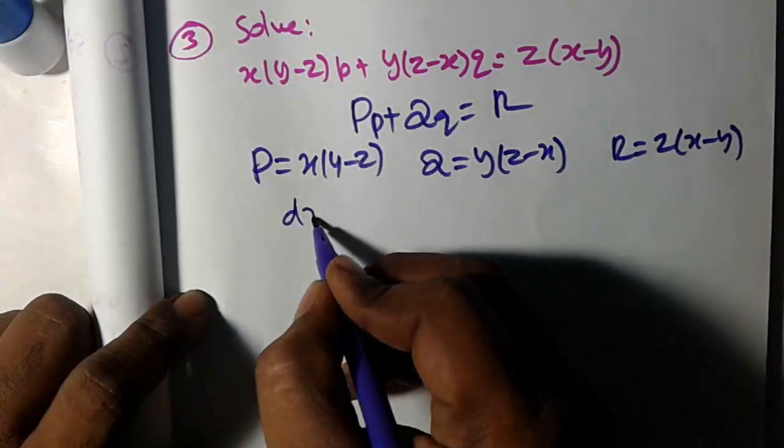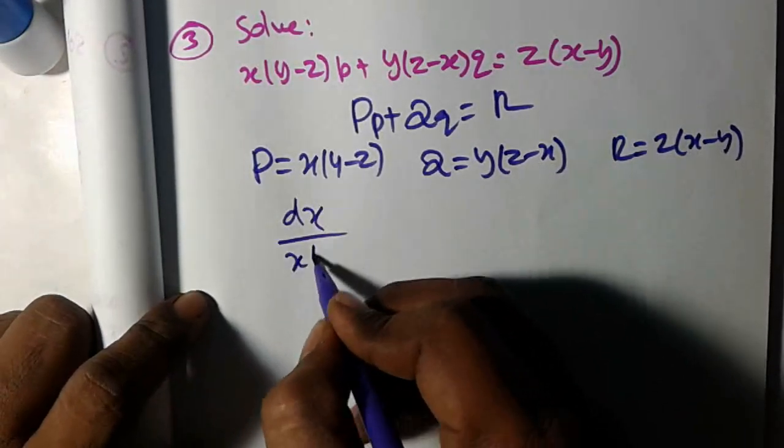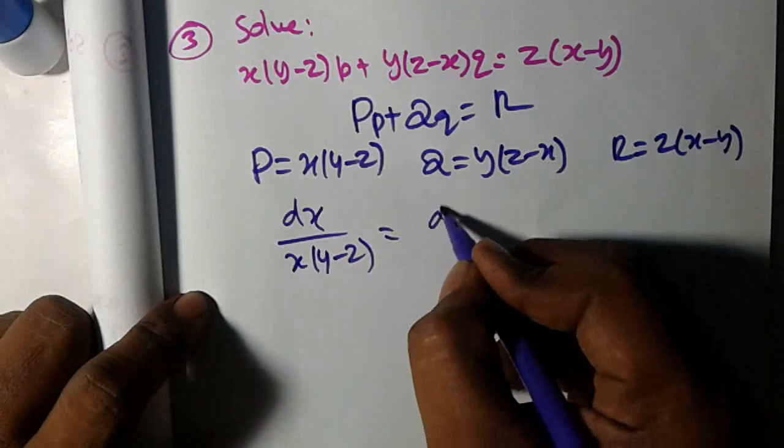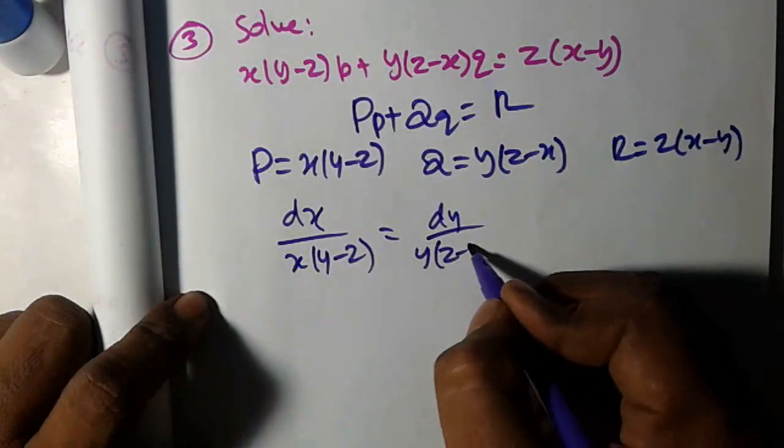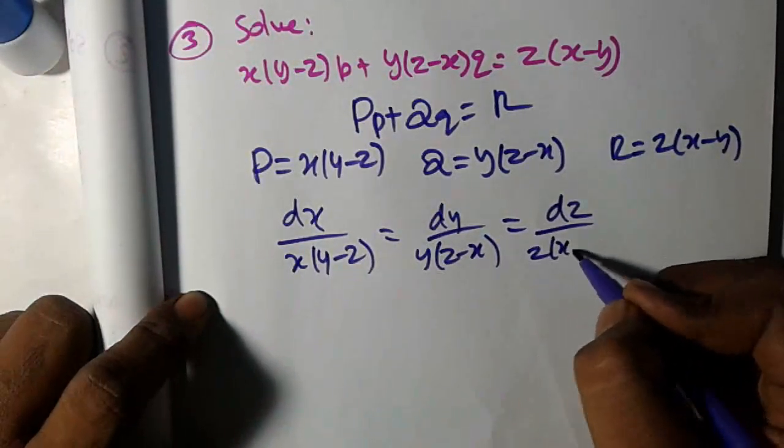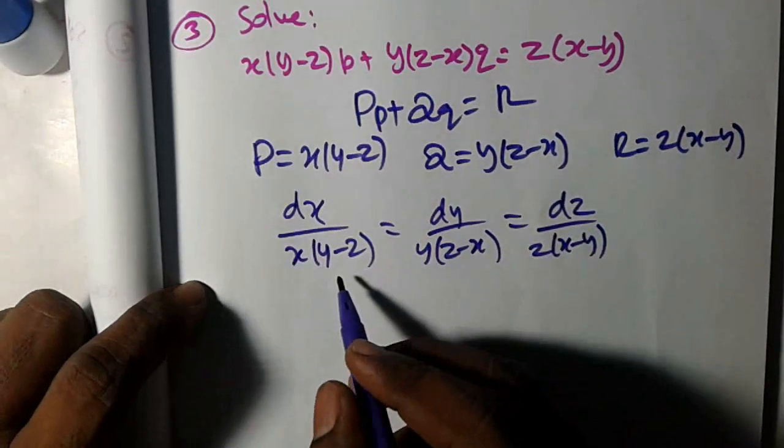The actual equation, the subsidiary equation: dx by x(y-z) equals dy by y(z-x) equals dz by z(x-y). This is the subsidiary equation. Direct method if you want.